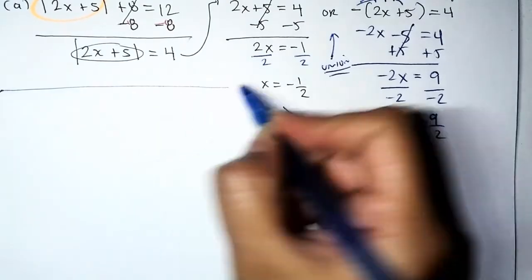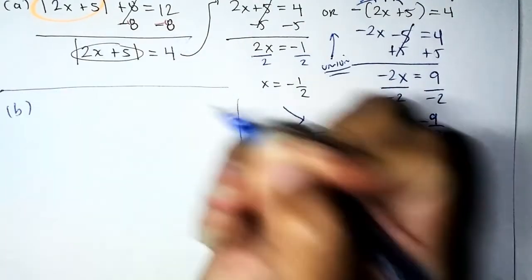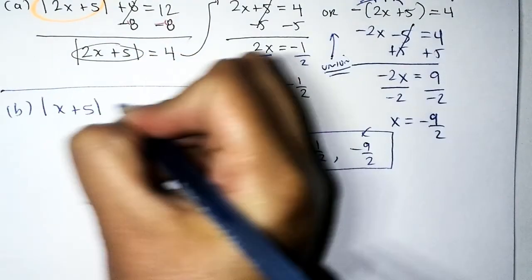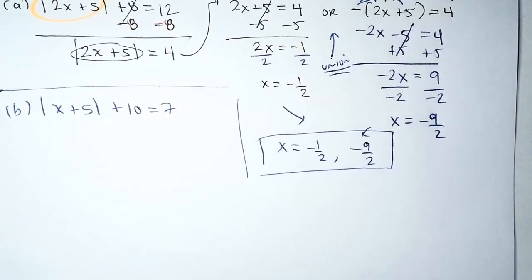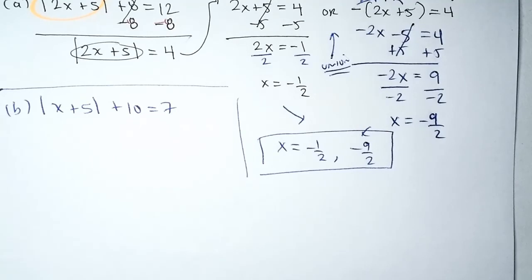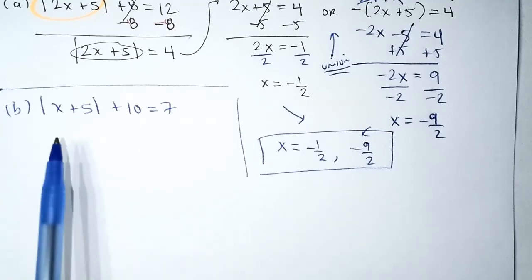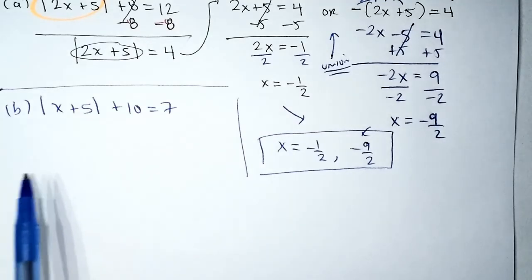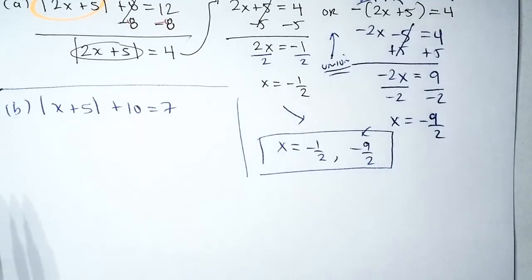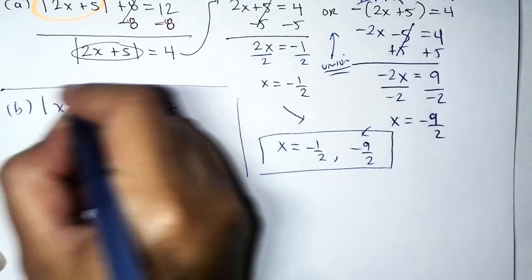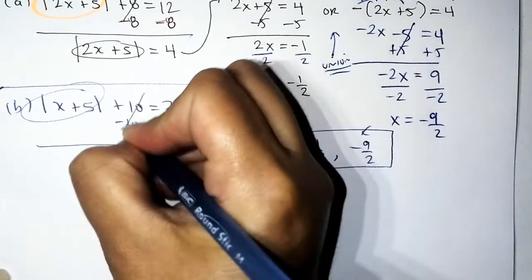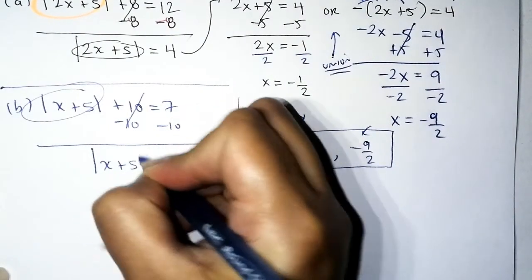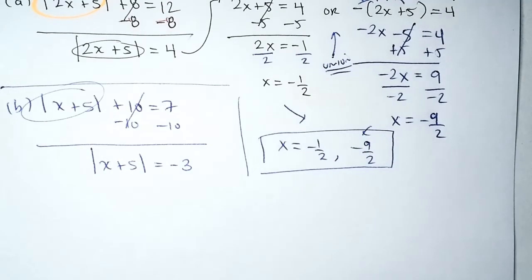Problem B: absolute value of x plus 5, increased by 10, equals 7. It's an absolute value equation, so the first step is to isolate the absolute value. To undo the addition of 10, subtract 10 from both sides, giving us absolute value of x plus 5 equals negative 3.